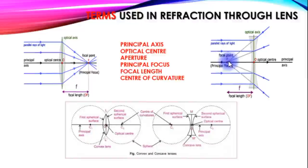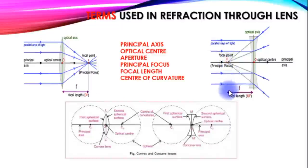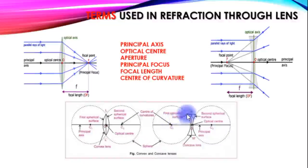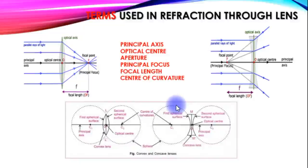The refracted rays appear to diverge from this point. This point is called the focal point or principal focus. The focal length is the distance from the optical center to the focus. The center of curvature is the center of the circle of which the lens surface is a part.